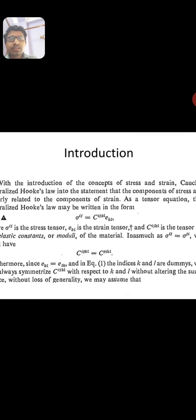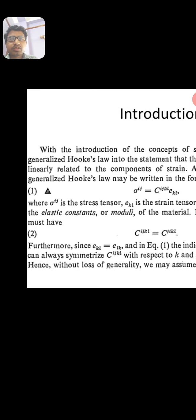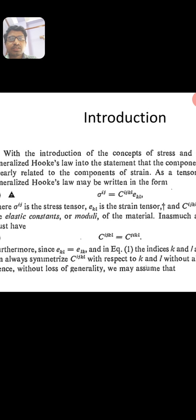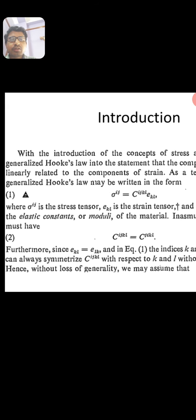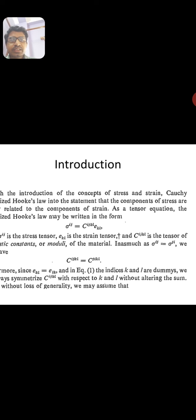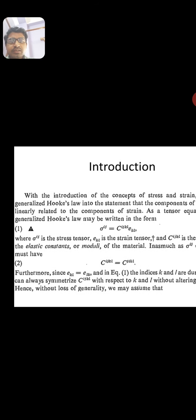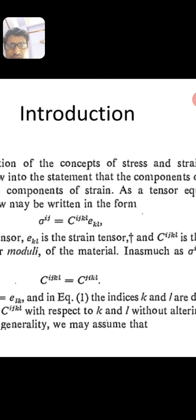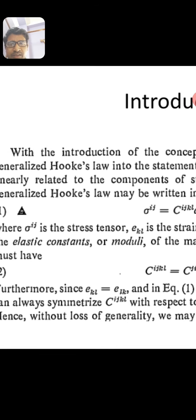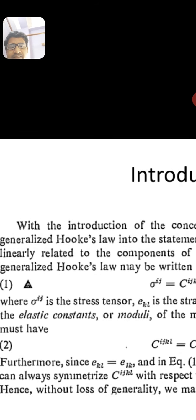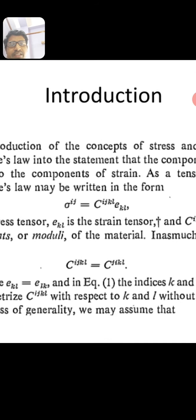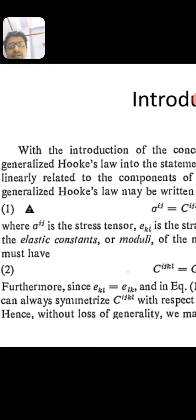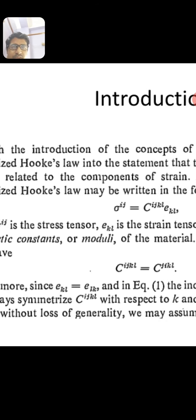Introduction: with the introduction of the concept of stress and strain, Cauchy generalized Hooke's Law into the statement that the components of stress are linearly related to the components of strain. As a tensor equation, the generalized Hooke's Law is: σ_ij = C_ijkl ε_kl, where σ_ij is the stress tensor, ε_kl is the strain tensor, and C_ijkl is the tensor of elastic constants or modulus of the material.